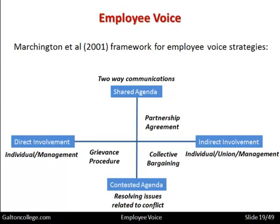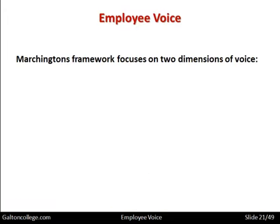With a grievance procedure, it could be a contested agenda where the individual deals directly with management. The individual has a grievance and will invoke a grievance procedure set up by the HR department. Employee involvement is when there is direct involvement between the individual and management with a shared agenda — the individual employee and management have direct contact and two-way communications between them, so there is employee involvement. This is the framework put forward by Marchington in 2001.